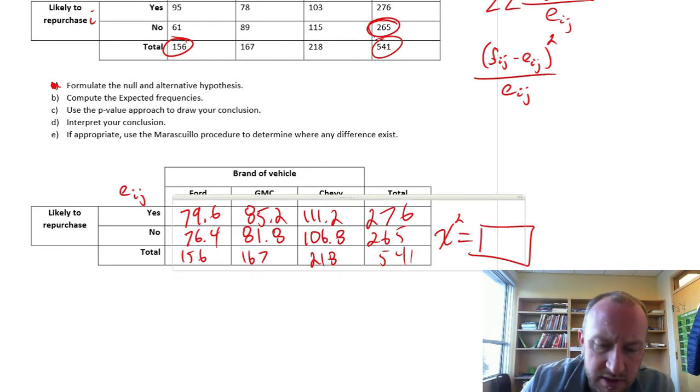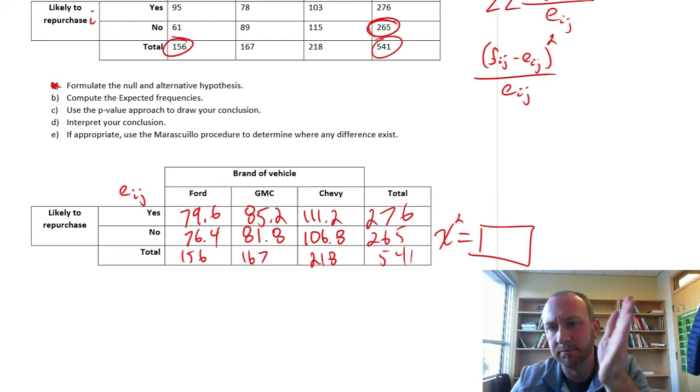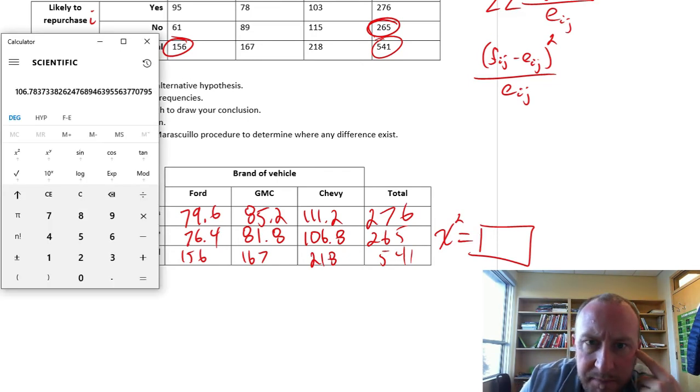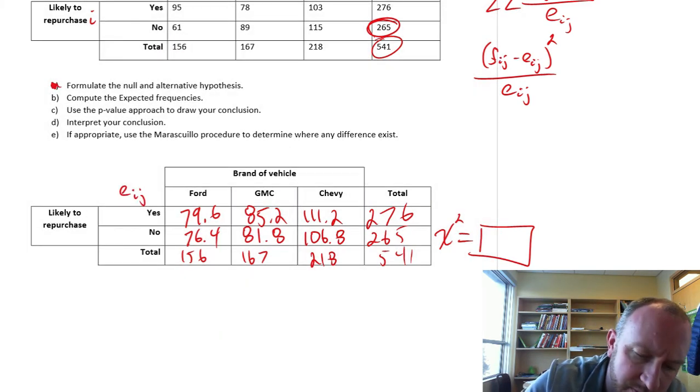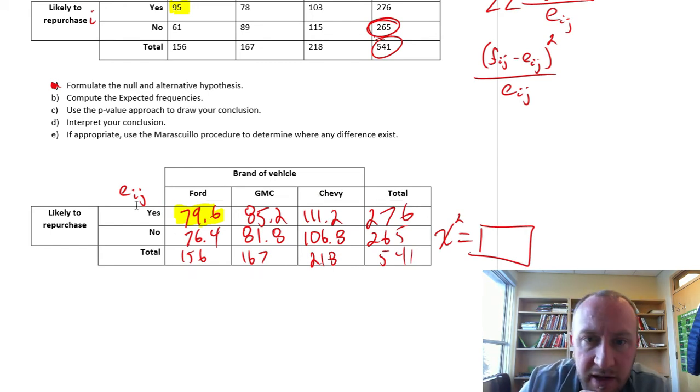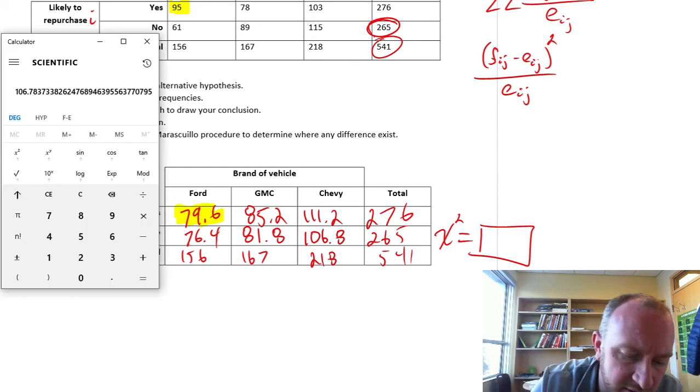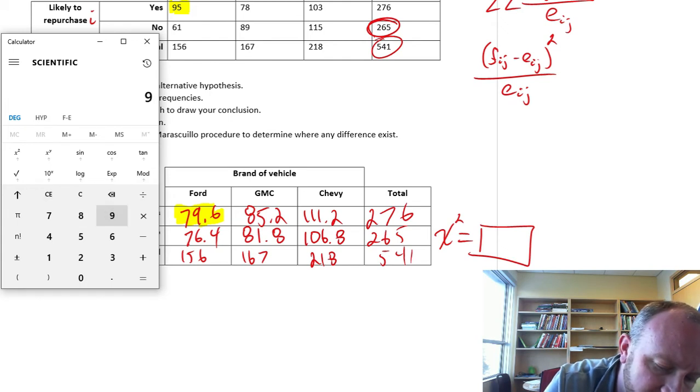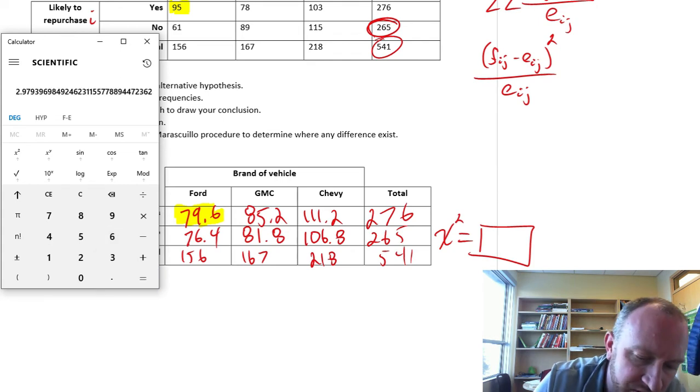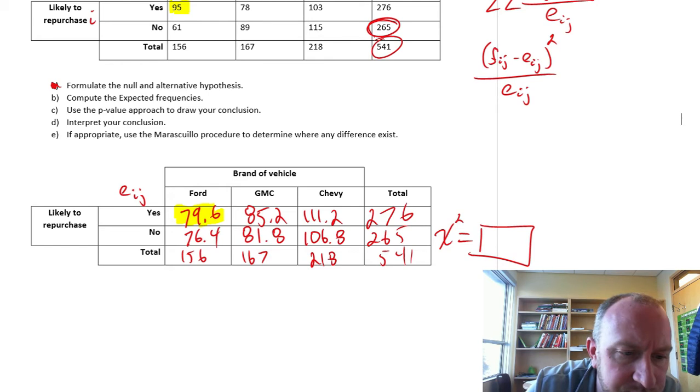So the first one, if we're looking at Ford, I'll go through each brand first. So I'll do Ford yes, Ford no, and then I'll do GMC yes, GMC no. The first one, I'm looking at this observed frequency minus this expected frequency, squared and divided by the expected frequency. So that's going to be 95 minus 79.6, squared, divided by 79.6, which is 2.98 for that first one.